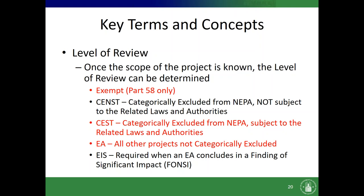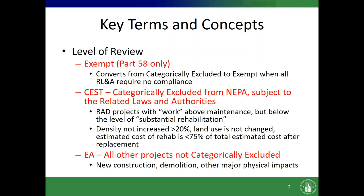There's a list of all the ways it can go within HUD environmental reviews. The ones we see a lot: projects convert to Exempt — which is a Part 58-only thing. Most of our projects for Part 50 fall into Assessed, which is categorically excluded from NEPA but subject to the related laws and authorities. Then there are Environmental Assessments, which are all the projects that are not categorically excluded — basically anything with demolition or new construction falls into an EA. EIS's are highly unlikely. A project initially designated as Assessed can also convert to an EA if there are mitigating requirements that make you need to do a full review.